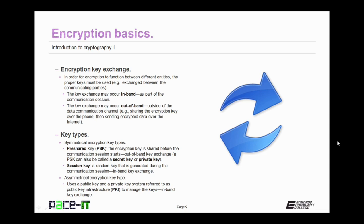There are several different types of security keys, and they can be further broken out by the type of encryption that's used. There are symmetrical encryption key types. There is the pre-shared key, or PSK. The encryption key is shared before the communication session starts, usually through an out-of-band key exchange. A PSK can also be called a secret key or a private key. Then there are session keys. This is a random key that is generated during the communication session, and it's a type of in-band key exchange.